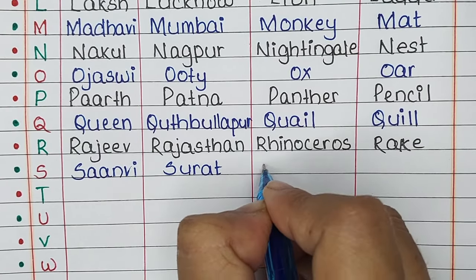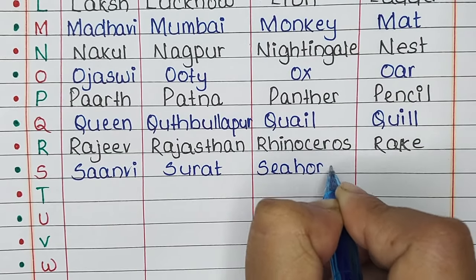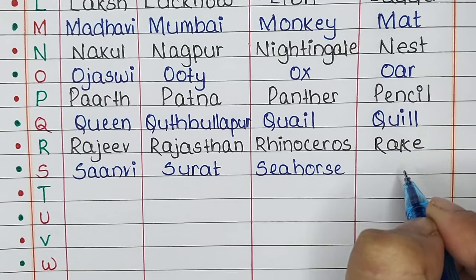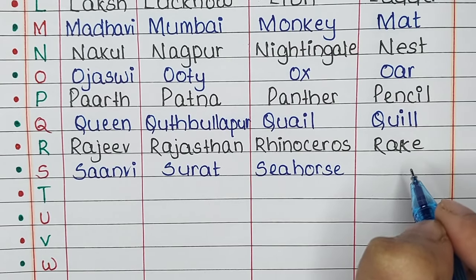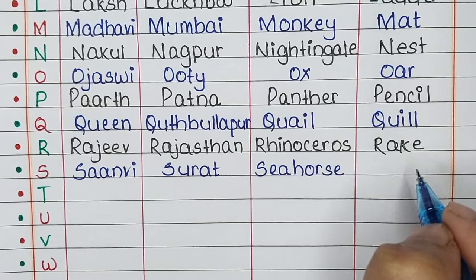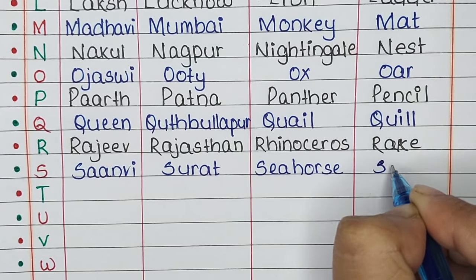Next is letter S. The name is Sanvi, the place is Surat, the animal is Seahorse, and the thing is Ship.